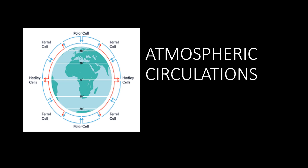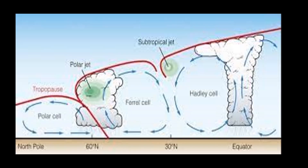Hello everyone, today we are going to discuss atmospheric circulations. Atmospheric circulations are about how air moves from regions of high pressure to regions of low pressure. Starting with the cells of atmospheric circulations: the first is the Hadley cell, another is the Ferrel cell, and the other is the Polar cell.